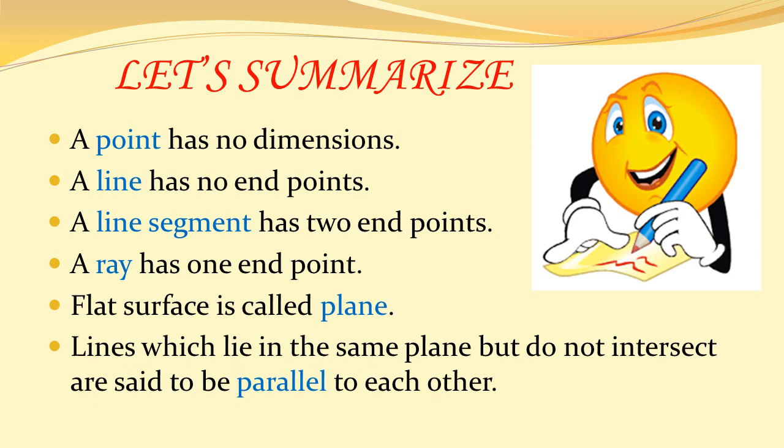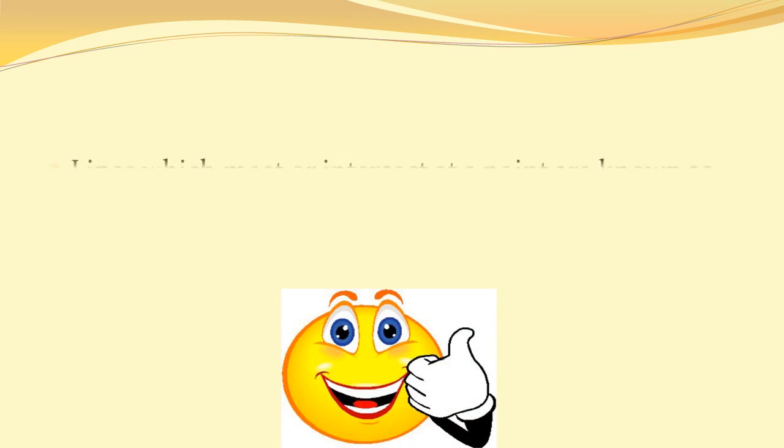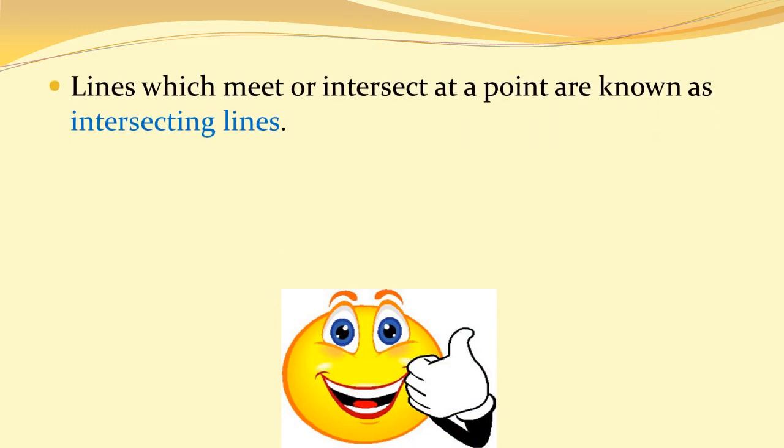Parallel lines: Lines which lie in the same plane but do not intersect are said to be parallel lines. Intersecting lines: Lines which meet or intersect at a point are known as intersecting lines.